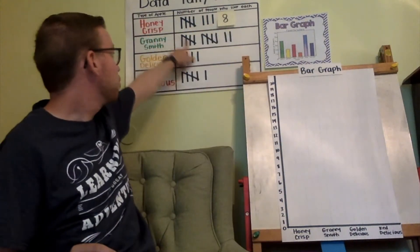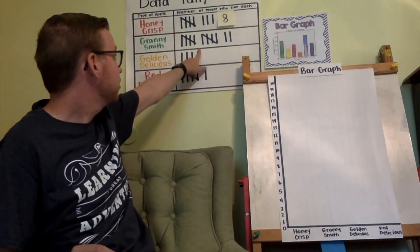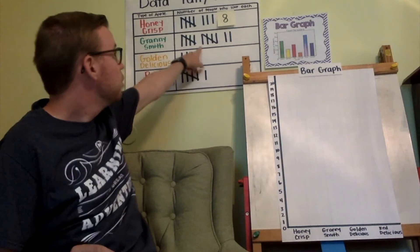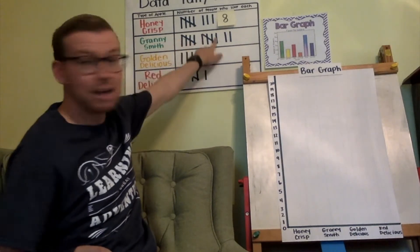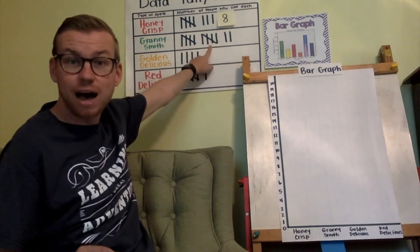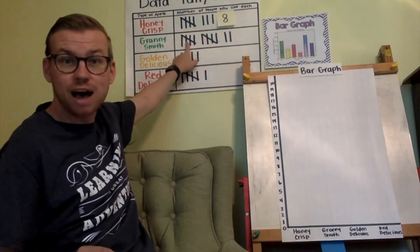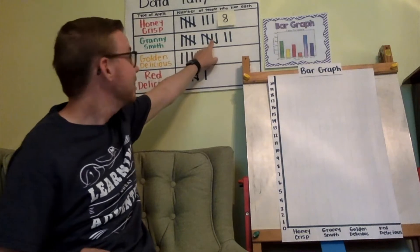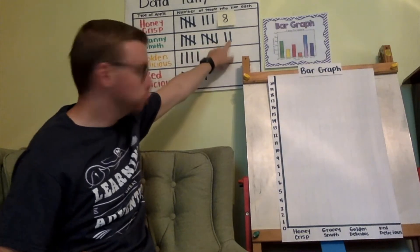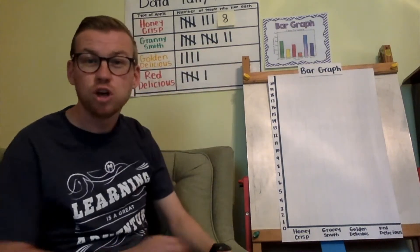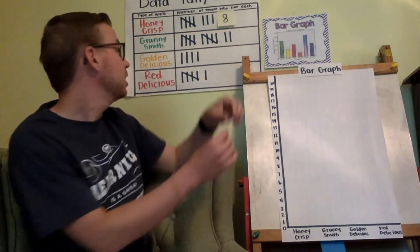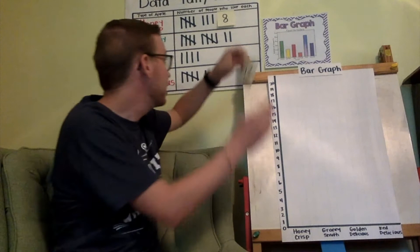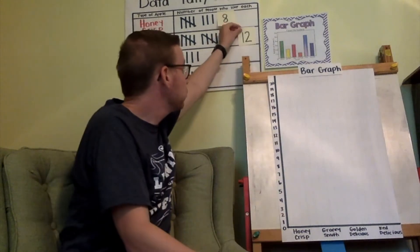Let's look at the next one: Granny Smith. Remember, these tallies are groups of five. So this is five, ten, eleven, twelve. Twelve people liked Granny Smith apples.